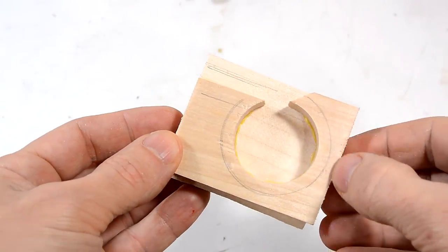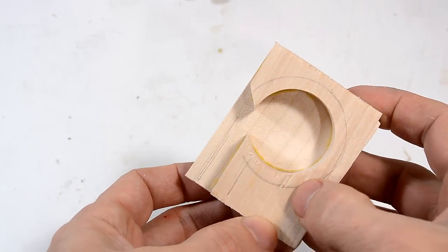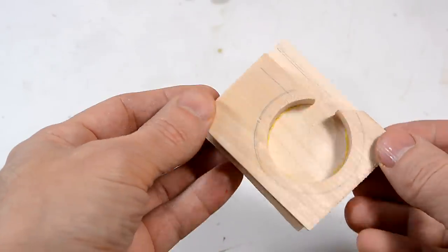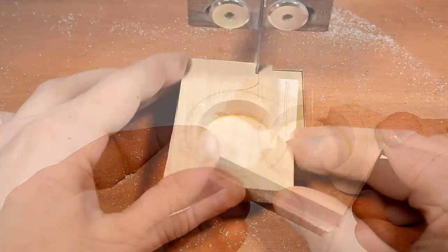Before I proceed, I'm gonna cut out the shape of this thing, which will be governed by the large cavity. And this is easiest to do before I glue everything together.